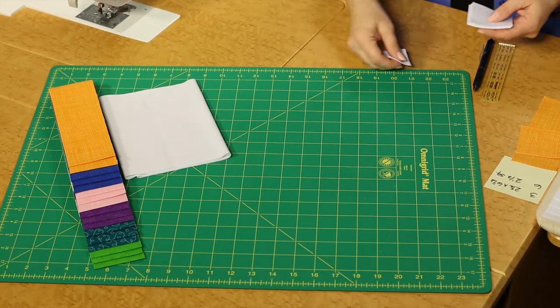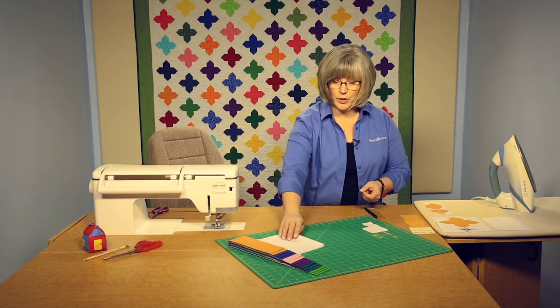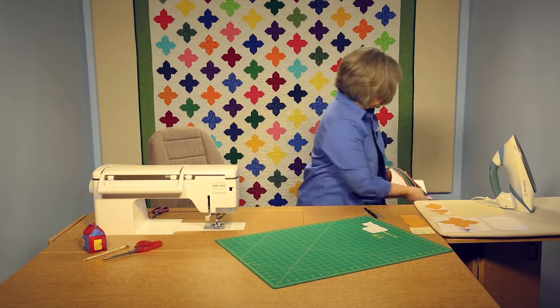Then from the background fabric, you're going to be cutting two and a half inch squares and one and a half inch squares. Let's get started with our construction.